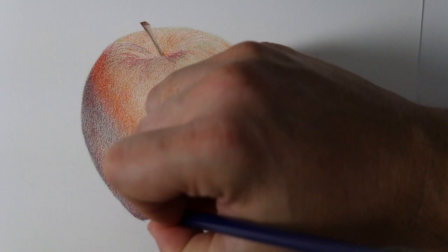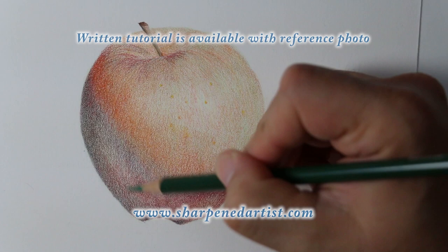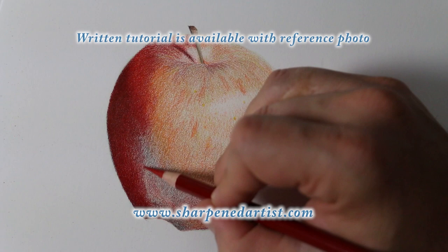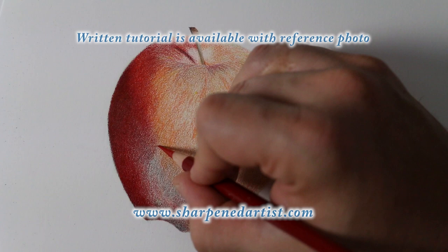Then I use that dark green again. My final layer is using the red and I'm just burnishing, that is I'm pressing very hard trying to fill in all the gaps in the apple.